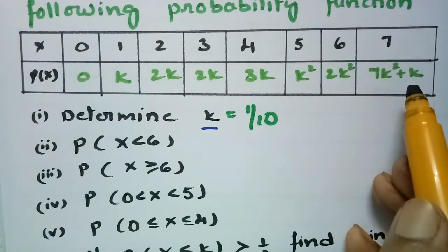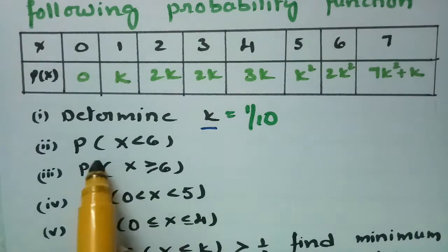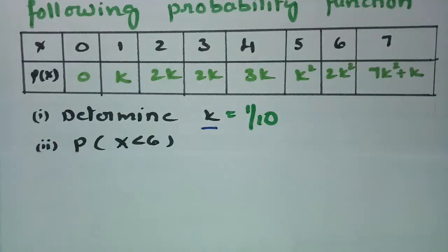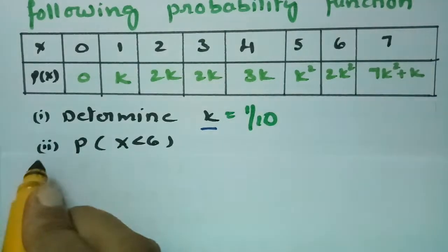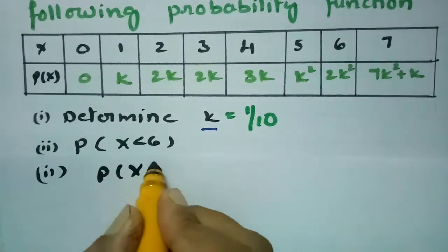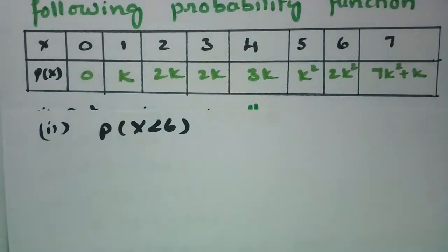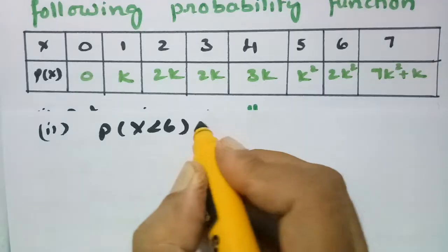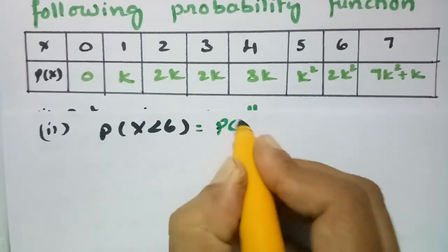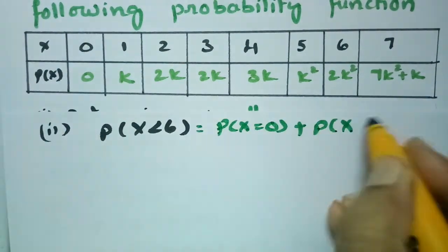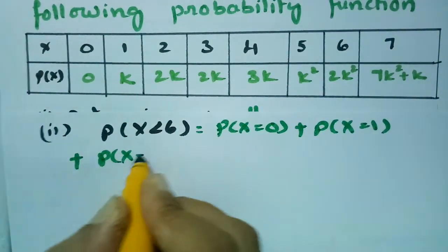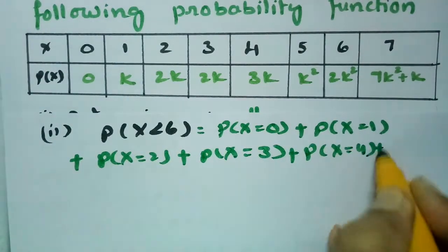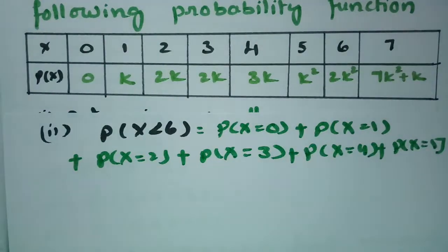After adding all these values and equating to 1, we got k = 1/10. The next question is the probability of X less than 6. For P(X < 6), we add from X = 0 to X = 5, that is P(X=0) + P(X=1) + P(X=2) + P(X=3) + P(X=4) + P(X=5).